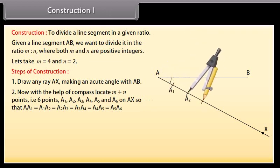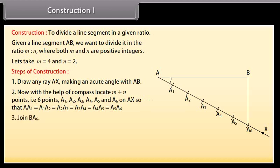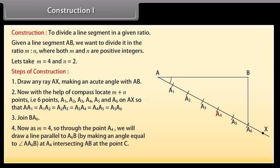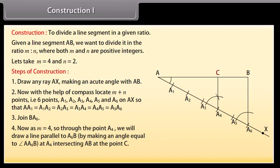A1, A2, A3, A4, A5 and A6 on AX so that AA1 = A1A2 = A2A3 = A3A4 = A4A5 = A5A6. Join B and A6. So through the point A4, we will draw a line parallel to A6B by making an angle equal to angle AA6B at A4, intersecting AB at the point C.